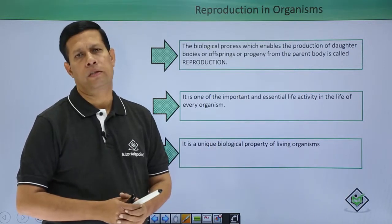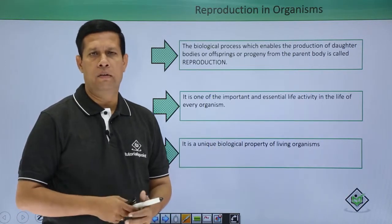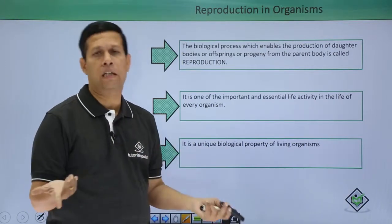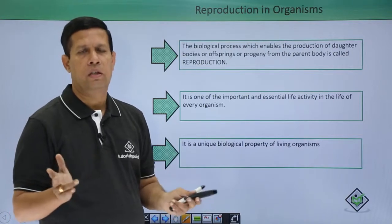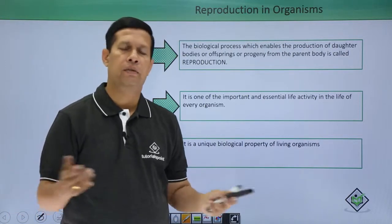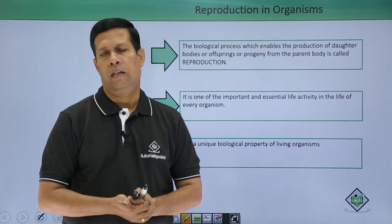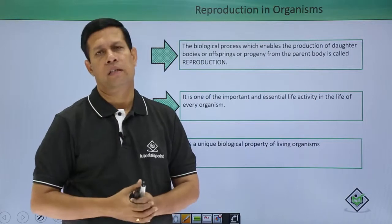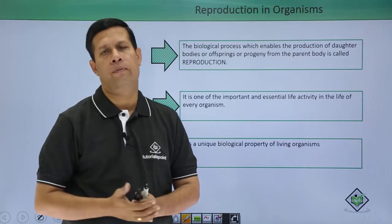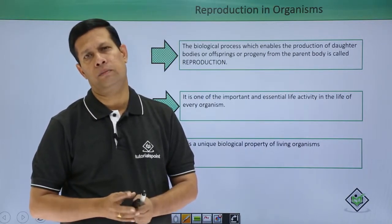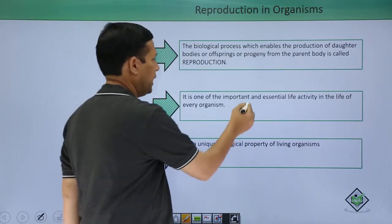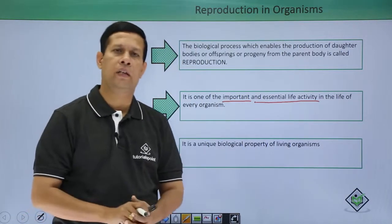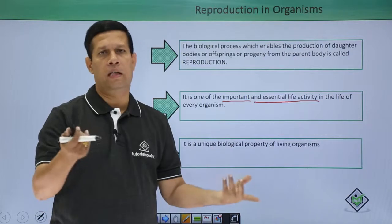Without the occurrence of reproduction, there is no completion of the life cycle of every living organism, because reproduction is a phase in the lifespan of every living organism. That is why it is taken as an important and essential life activity of living organisms.